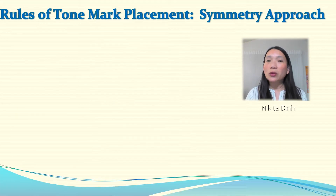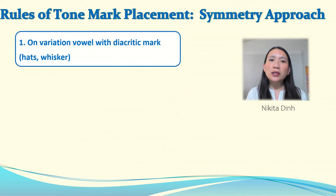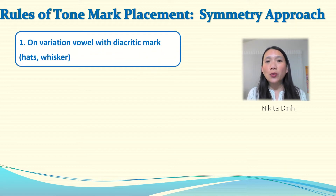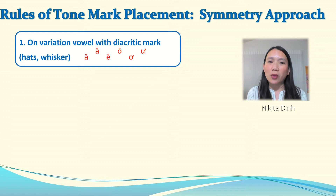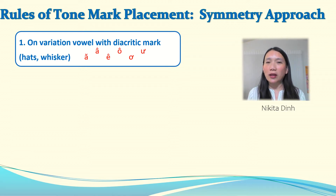The symmetry approach is very simple — only two rules. The first rule: place the tone mark on the variation vowel with diacritic mark. There are six vowels in Vietnamese that already come with diacritic marks. If you see such a vowel, place the tone mark there. Basically, gather the marks together.